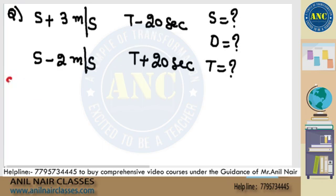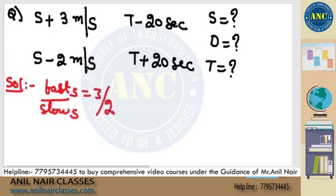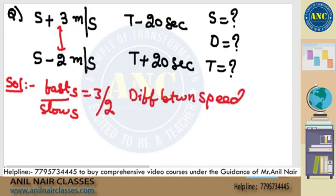Now again solution. Listen carefully. Faster speed by slower speed. It is 3 and 2. But according to the question, difference is 5. These all you don't need to write, but I am explaining. Difference between the speeds is 5. Difference is 1. So multiply by 5. This is 15 and it is 10.